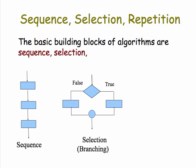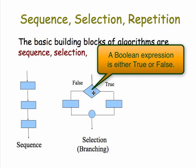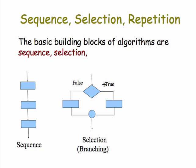The second building block is called selection. This is based on a Boolean condition, meaning an expression which can be either true or false. If it's true, it causes the algorithm to go down this branch and do this statement. If it's false, it causes the algorithm to go to the left branch and do these statements. And then when it's finished, it continues on to the next statement in the algorithm.